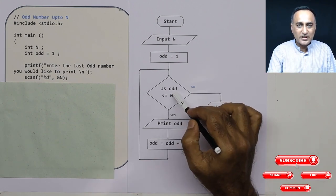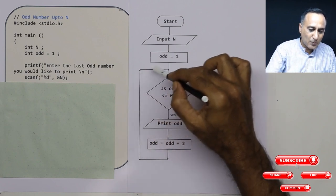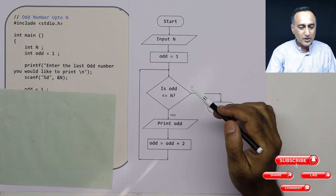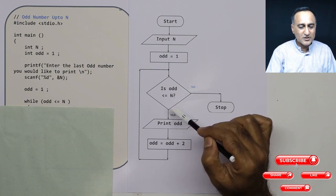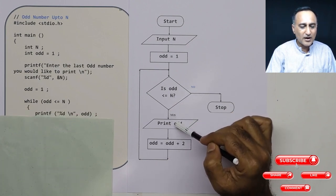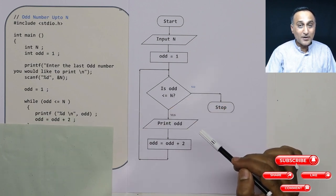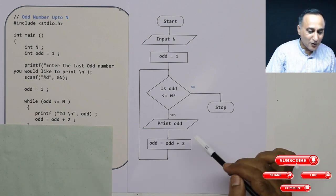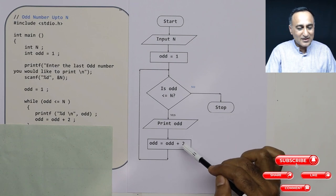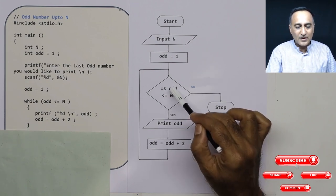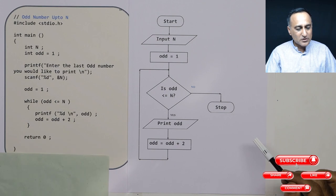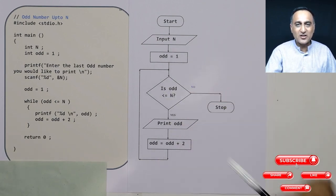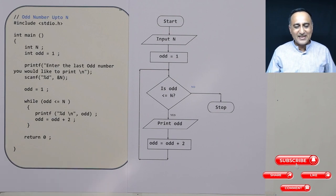I convert the decision box into a while loop. odd is initialized to 1. While odd is less than or equal to n: I first print odd, then increase odd by 2 — because from 1 the next odd number is 3, not 2. I go back to the condition, and as long as odd is less than or equal to n, I keep printing and incrementing by 2. This process keeps repeating as long as odd is less than or equal to n. The minute odd exceeds n, we have done printing all the odd numbers between 1 and n.